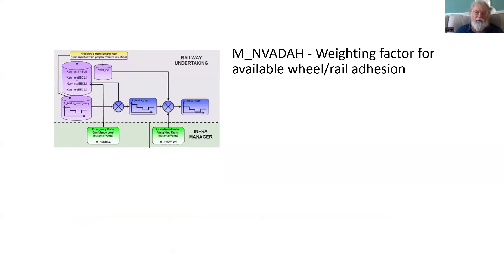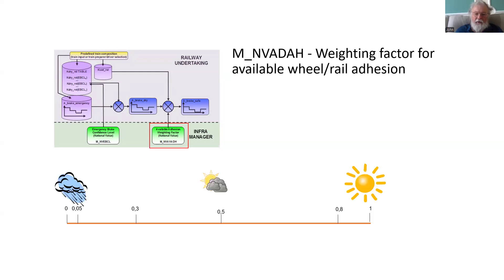The other factor is available wheel-rail adhesion. Rails are not always dry and wheels are not always in the best condition. On a nice hot sunny day grip may be really good, but on an overcast or wet day grip goes down. If you are in a hot country with very little rain, you might set the wheel-rail adhesion to a high number, meaning rails are nearly always dry. If, however, you're in another part of the world, you might choose to set a lower value.